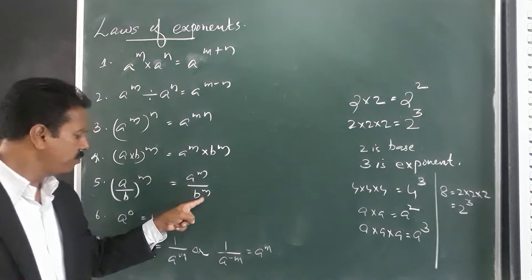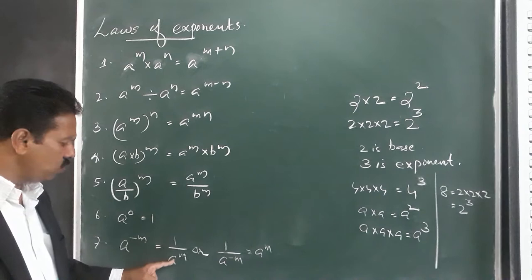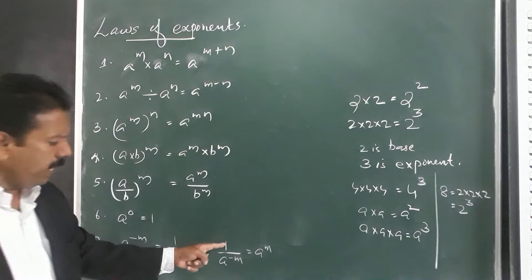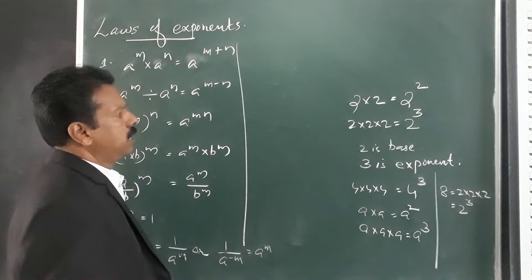When the exponent is negative: a raised to the power of minus m is equal to one divided by a raised to the power of m. The exponent becomes positive. We can write different examples to illustrate this.